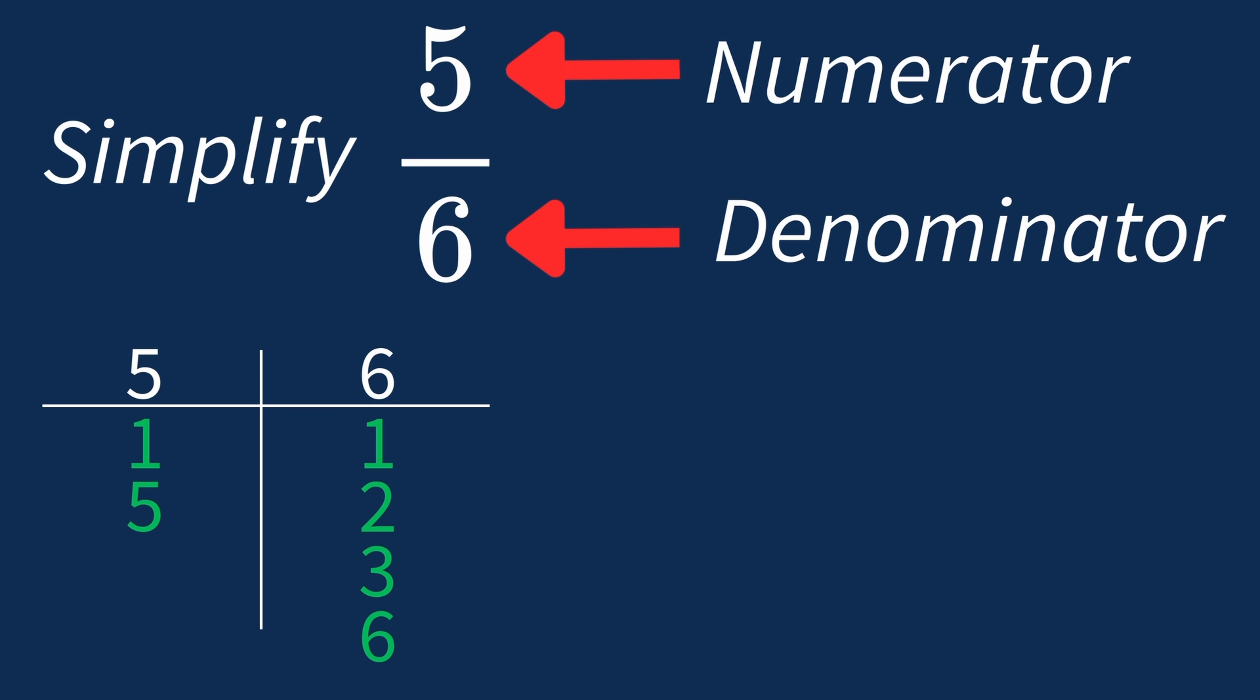So in this case, the largest common factor is 1. This means we need to divide both the numerator and denominator by 1. First, we take the numerator, 5, and divide it by 1, which still leaves us with 5.